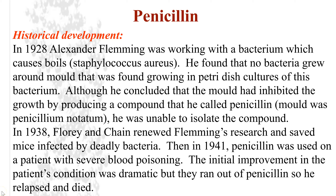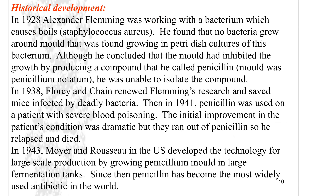Fleming's research was continued in 1938 by Florey and Chain, who were able to isolate the compound and actually save mice. Then in 1941, penicillin was used on a patient with severe blood poisoning and it did show initial improvement in the patient's condition, but they ran out of penicillin and the bacteria won over and the patient died. In 1943, Moyer and Raper were able to develop technology to make penicillin on a large scale, and now it is the most widely used antibiotic in the world.